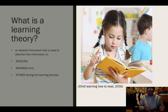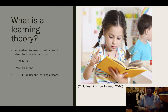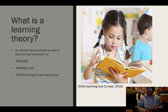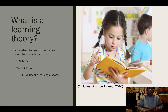So first of all, what is a learning theory? A learning theory is an abstract framework that is used to describe how information is received, managed and stored during the learning process. This includes cognitive, emotional and environmental influences as well as prior experience, as they all play a part in how understanding a worldview is acquired or changed and how knowledge and skills are retained.